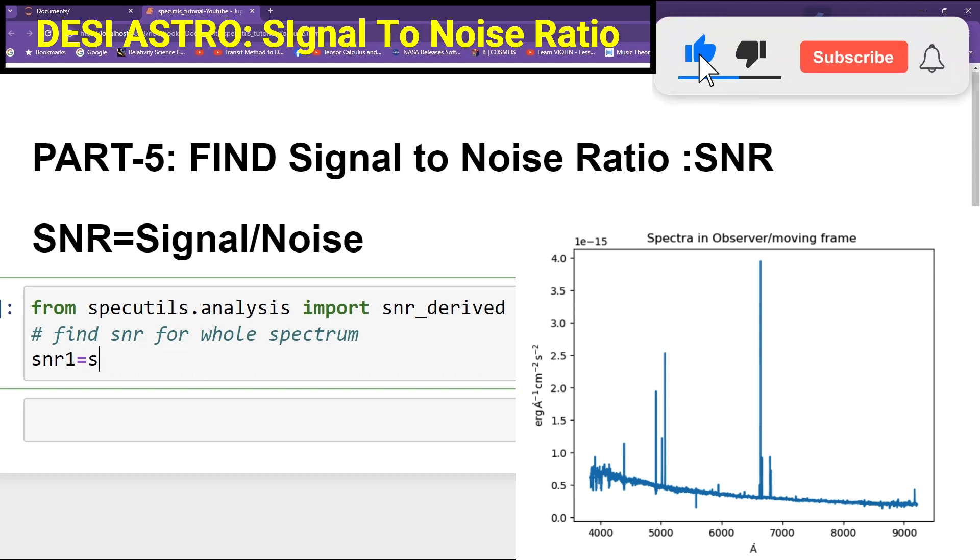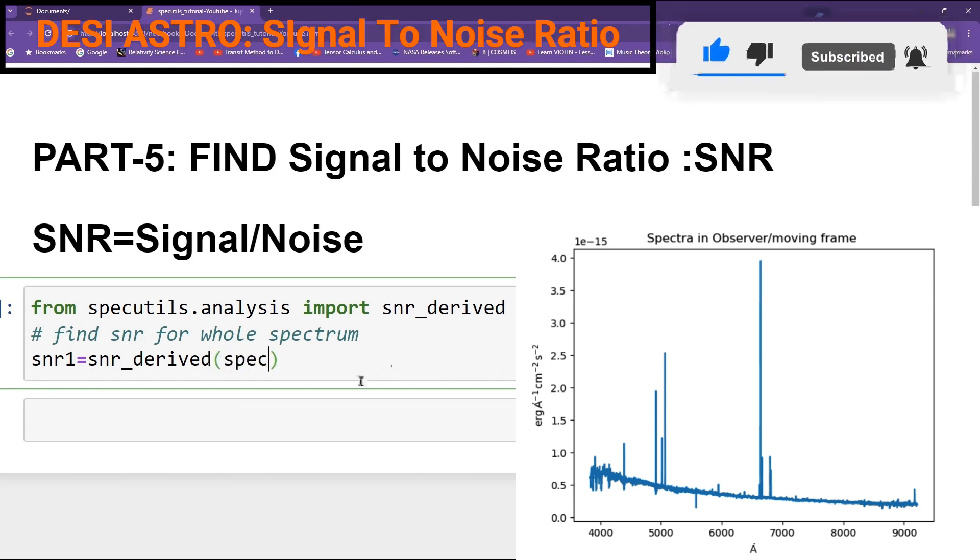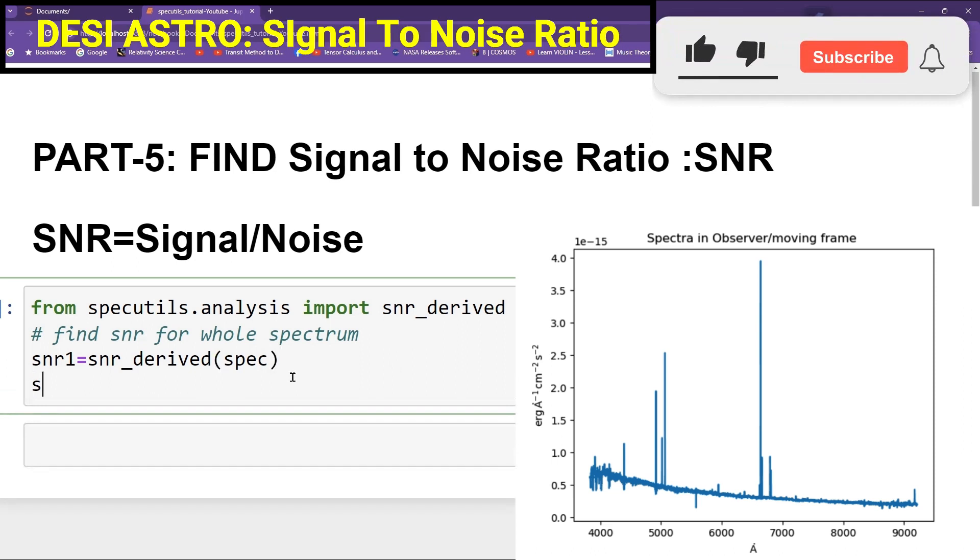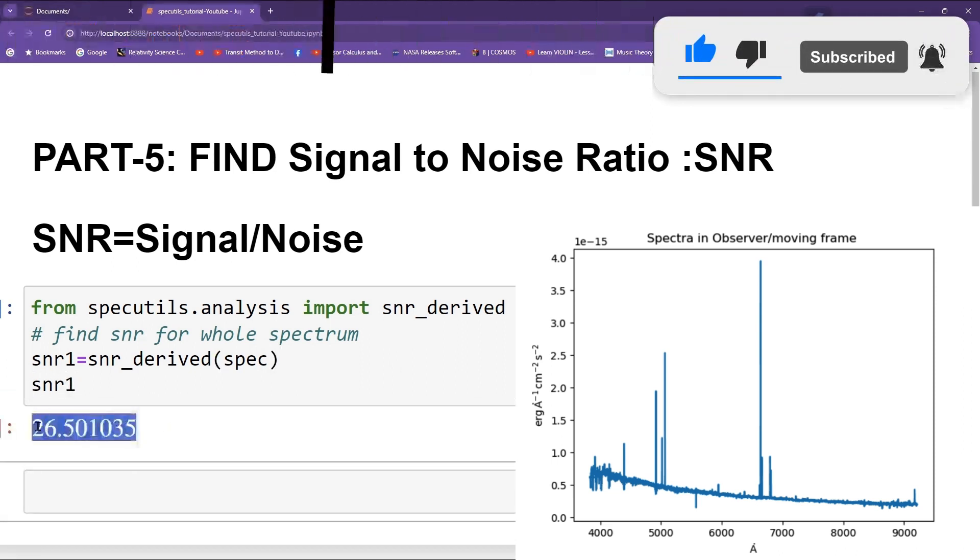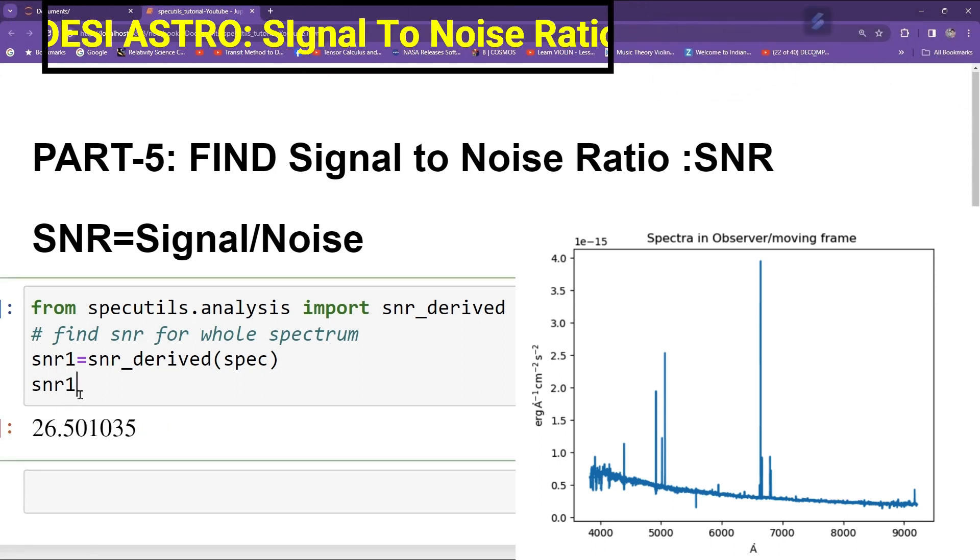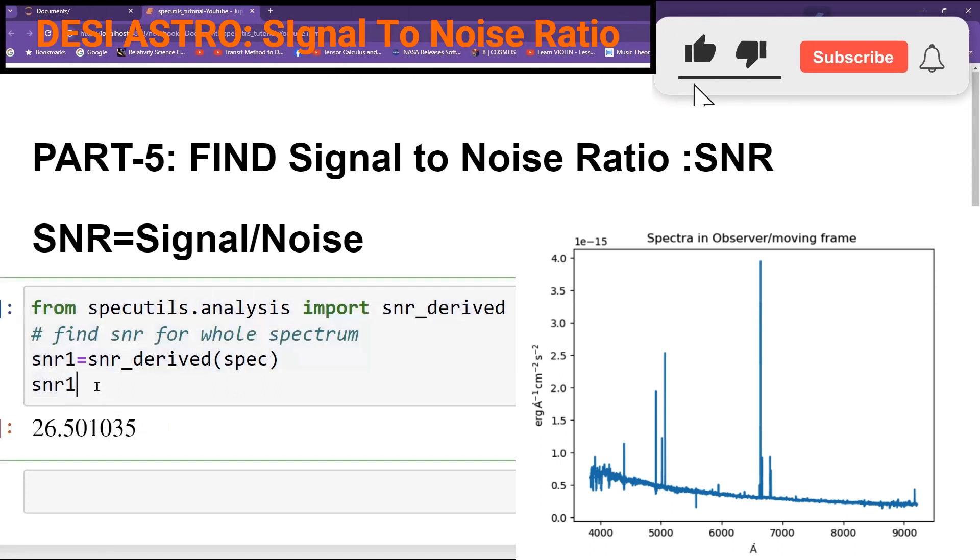Type here snr_derived and give your Spectra. You can give here a spec. And now you can print SNR1. So you can see that you have SNR equal to 26.51.